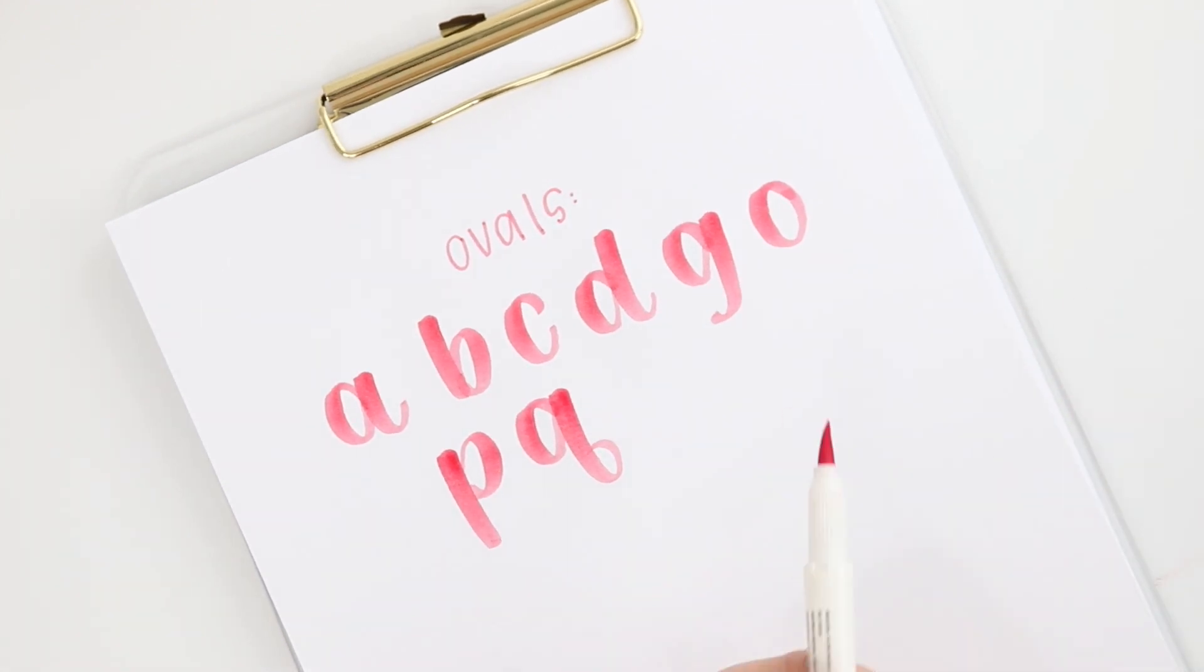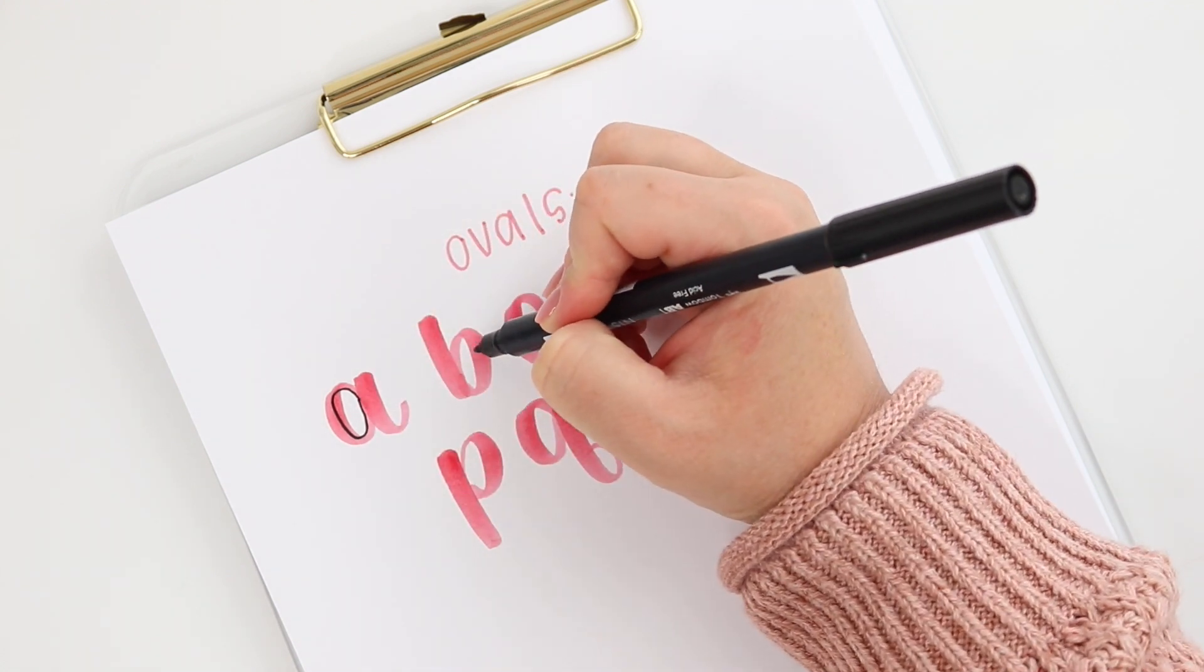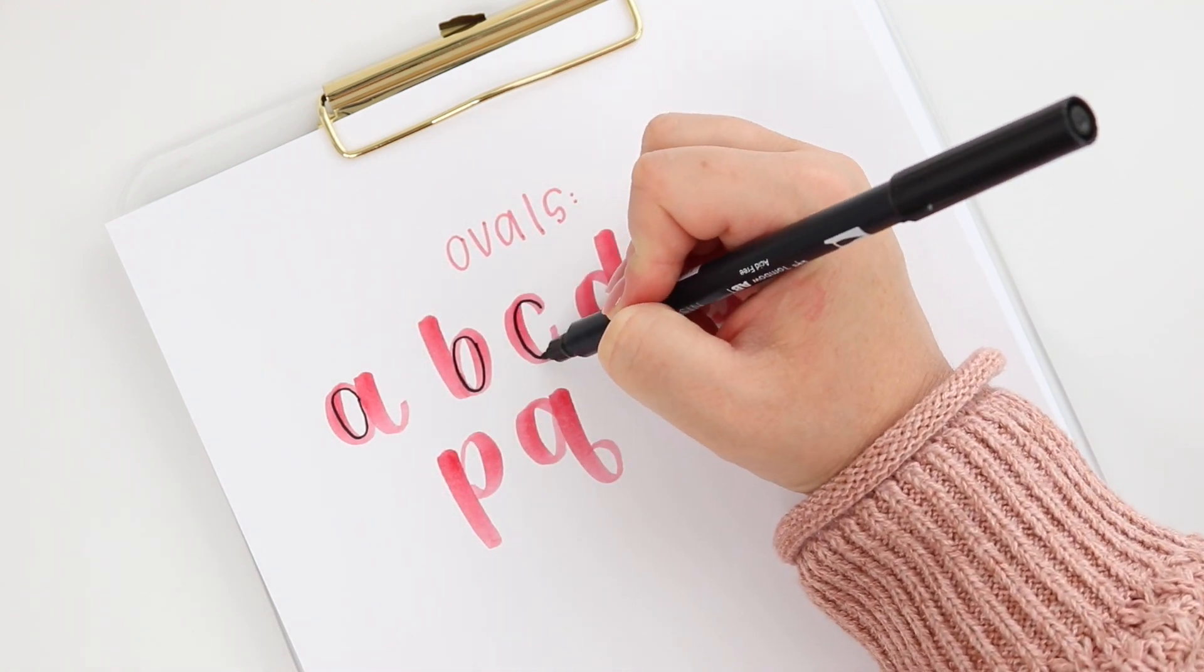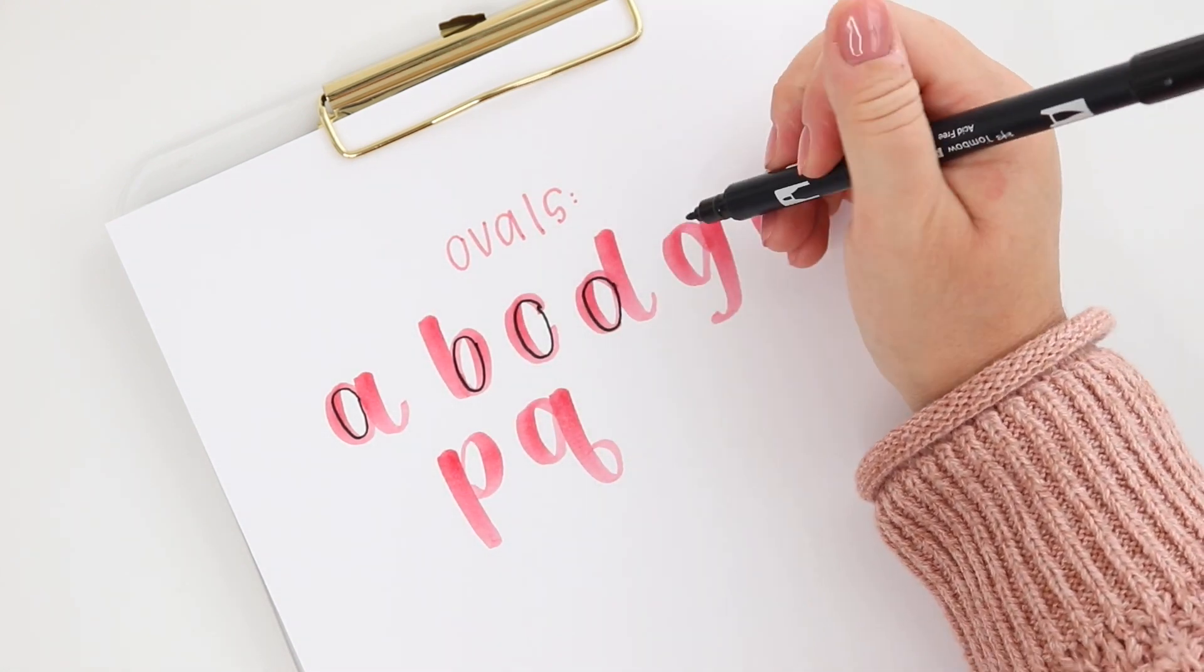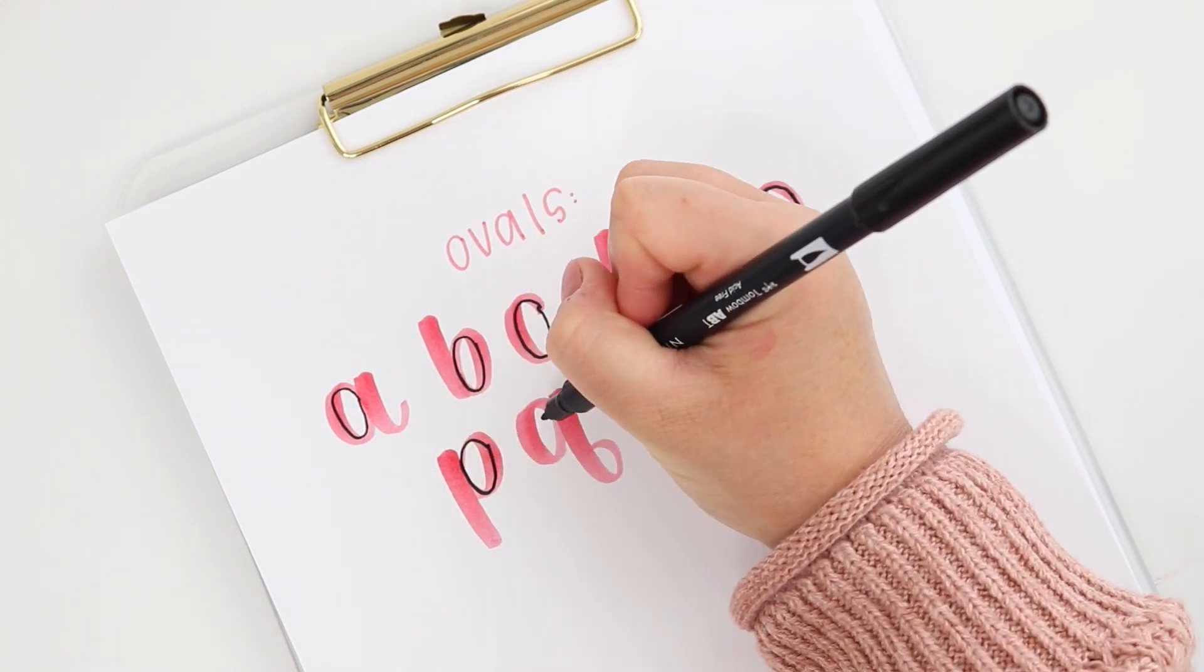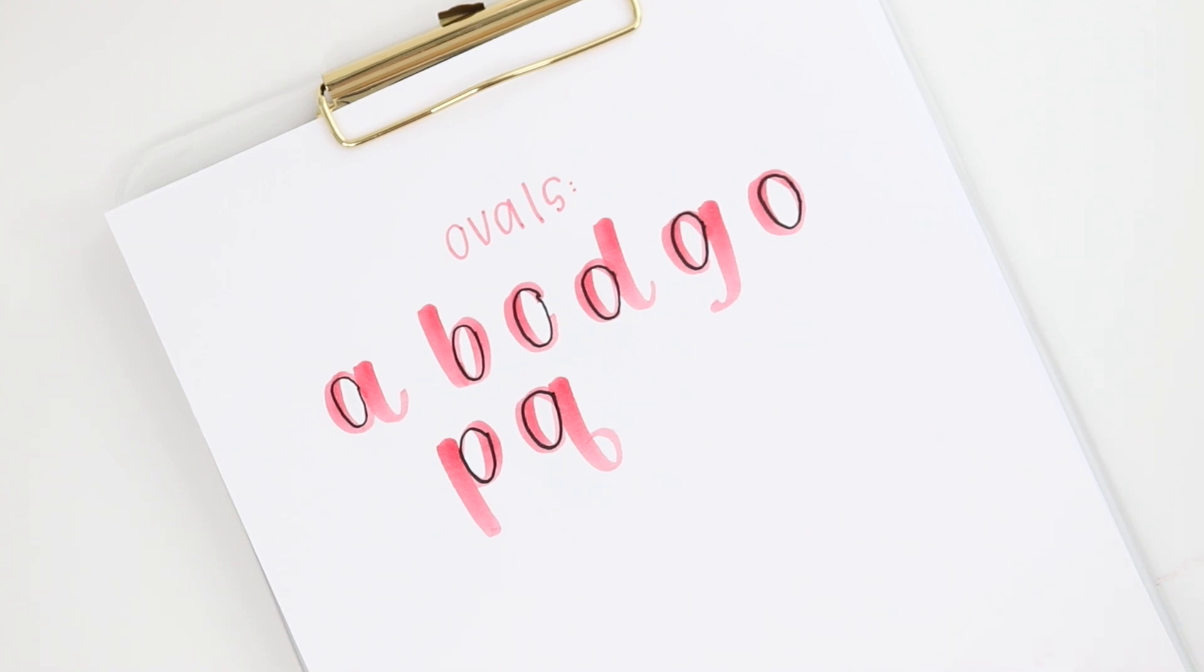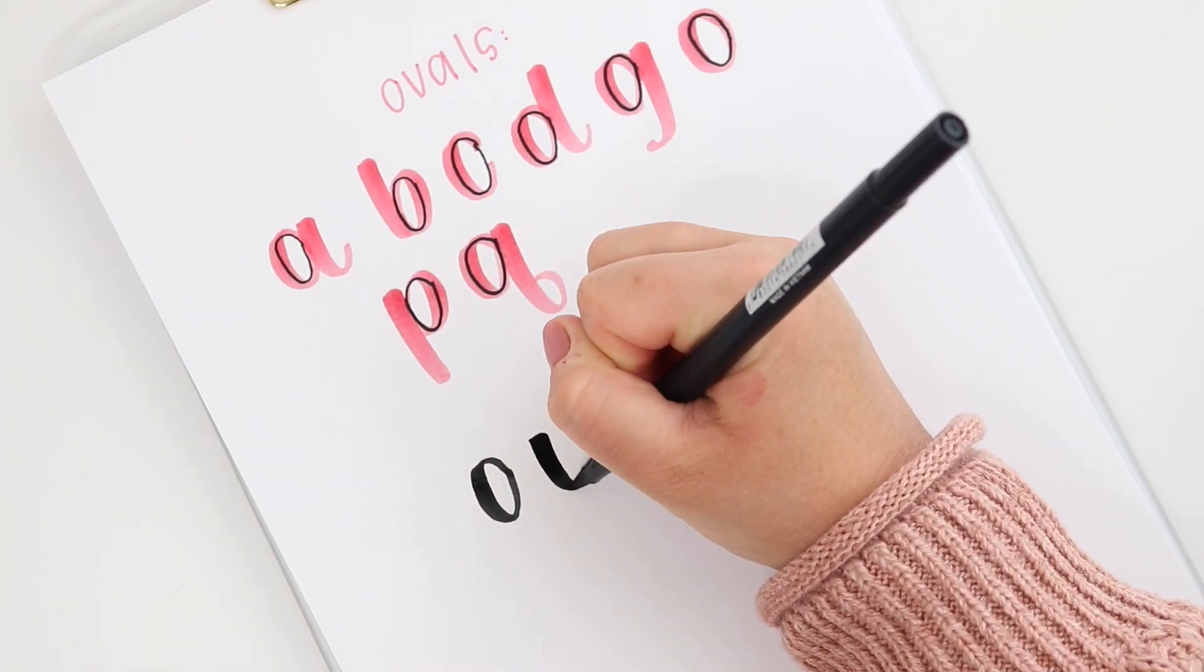So as you can see that oval shape is the base of a lot of these letters and drawing a different looking oval can make a completely different look for your letters. If you draw a super narrow and tall oval many of your letters will take on a much different look than if you were to draw a slanted or more round looking oval.